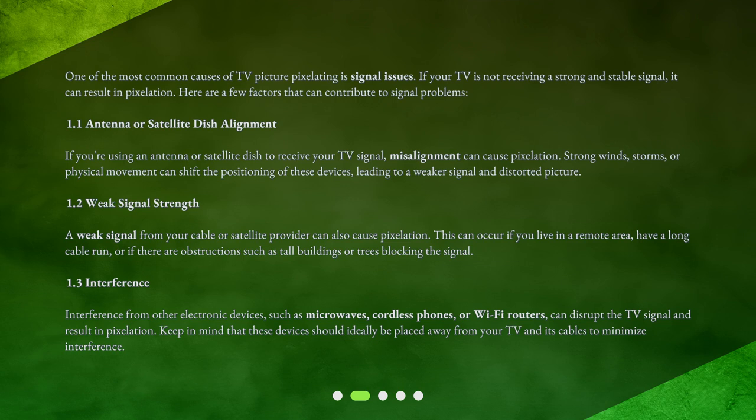Antenna or Satellite Dish Alignment: If you're using an antenna or satellite dish to receive your TV signal, misalignment can cause pixelation. Strong winds, storms, or physical movement can shift the positioning of these devices, leading to a weaker signal and distorted picture.